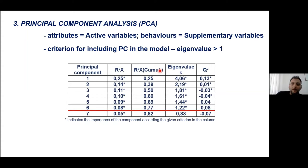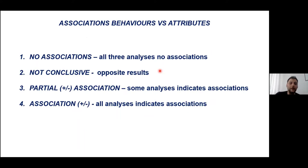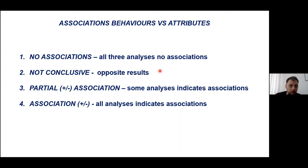Based on the parameters from the cluster analysis, we classified the presence or absence of any association between attributes and behavior. The third statistical analysis was Principal Component Analysis (PCA), where we used attributes as active variables and behaviors as supplementary variables. In total, we used six principal components explaining 77 percent of the variance of the collective data. Across all three analyses, if none showed any association, we classified it as no association; if results were mixed, as inconclusive; and if some or all indicated association, we classified it as a present positive or negative association.